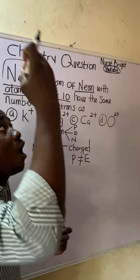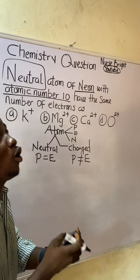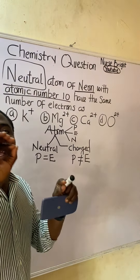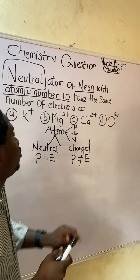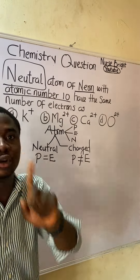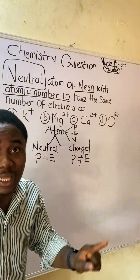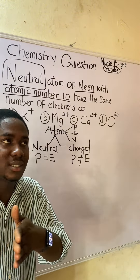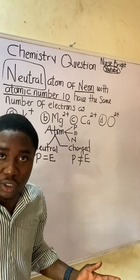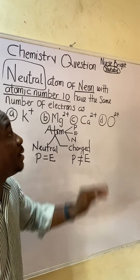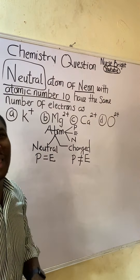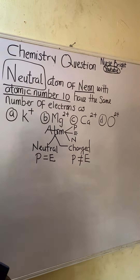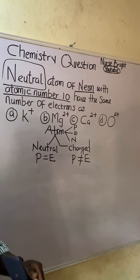In the periodic table, neon is an element that belongs to the group 8 family called the noble gases, rare gases, inert gases, or aerogens. They are the group 8 elements and neon is one of them. But what I'm focused on is solving this question.